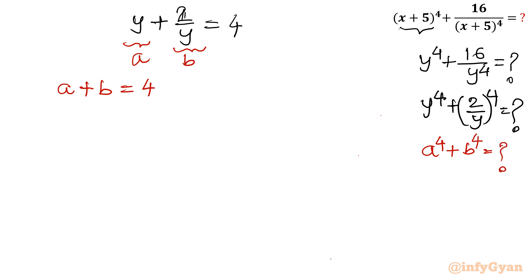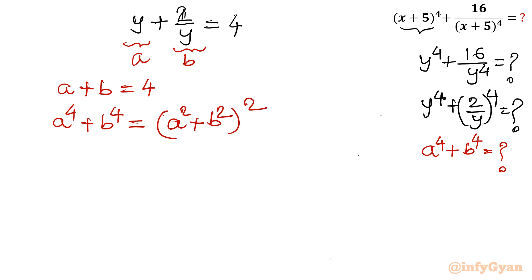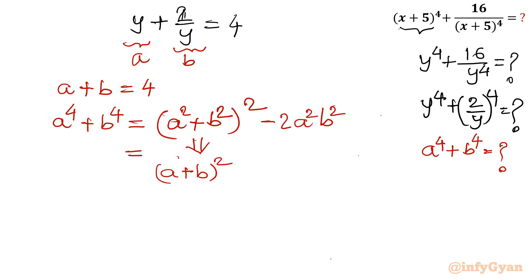We use the identity: a⁴ + b⁴ = (a² + b²)² − 2a²b². Further, a² + b² = (a + b)² − 2ab. So the full expression becomes: ((a + b)² − 2ab)² − 2(ab)².